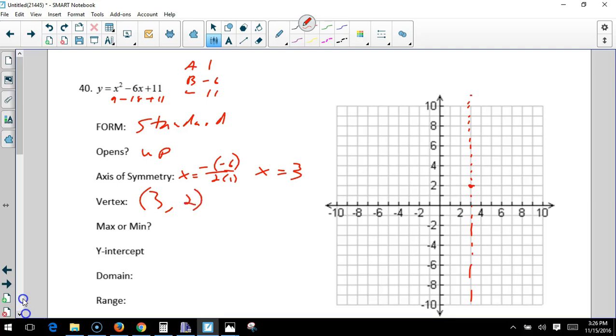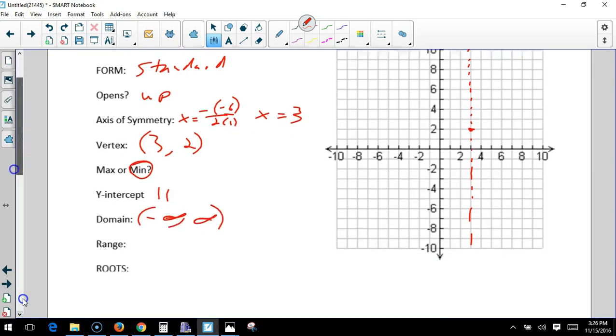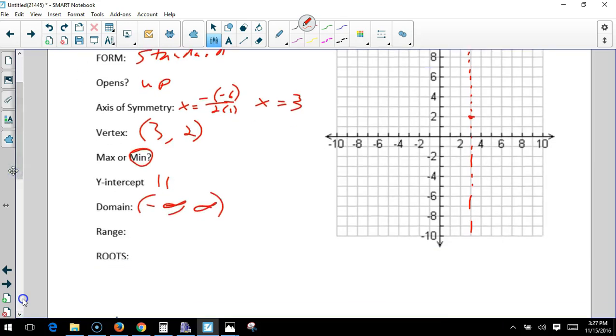Remember, it's opening up, so that's a minimum. The y-intercept we do know. That's at C, right there, 11. My domain, not changing. Negative infinity to positive infinity. It's opening up, so how low does it go? 2, and that's inclusive. How high? Positive infinity.